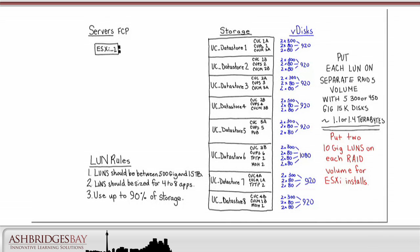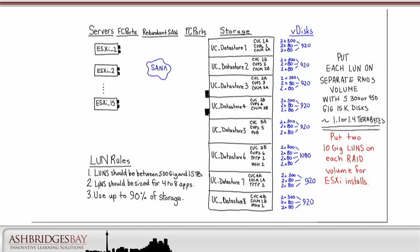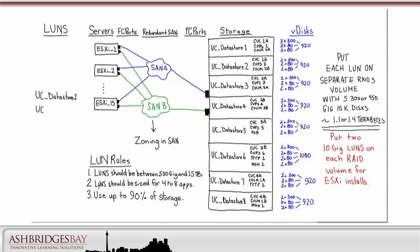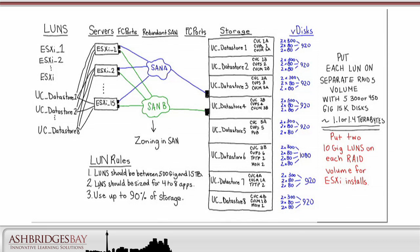Let's put our 15 ESXi servers on the drawing. Each server has two VHBAs — fiber channel ports — one connected to SAN A and the other to SAN B. Zoning in the SAN will be configured to allow all of the servers to see all of the UC Datastore LUNs, and zoning will also be configured so that the ESXi servers can only see their own ESXi install LUNs.